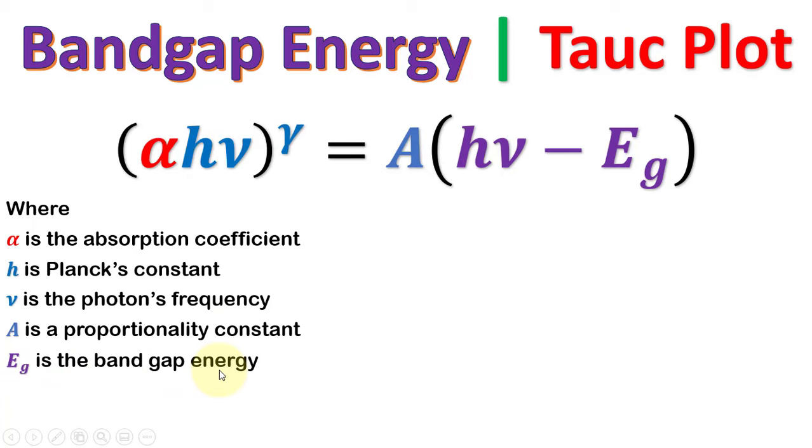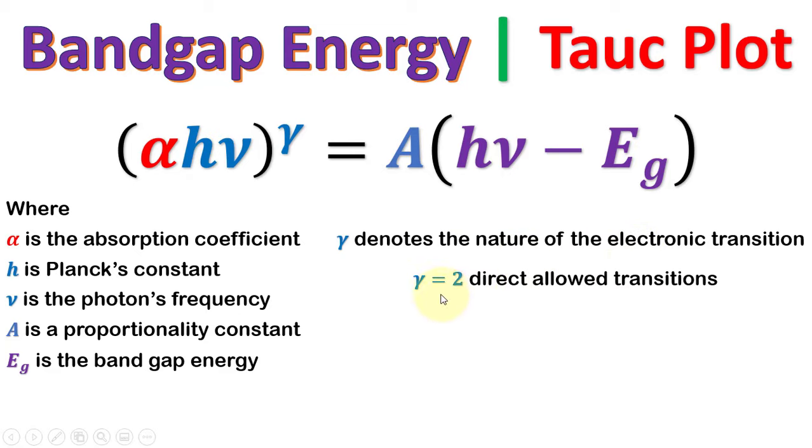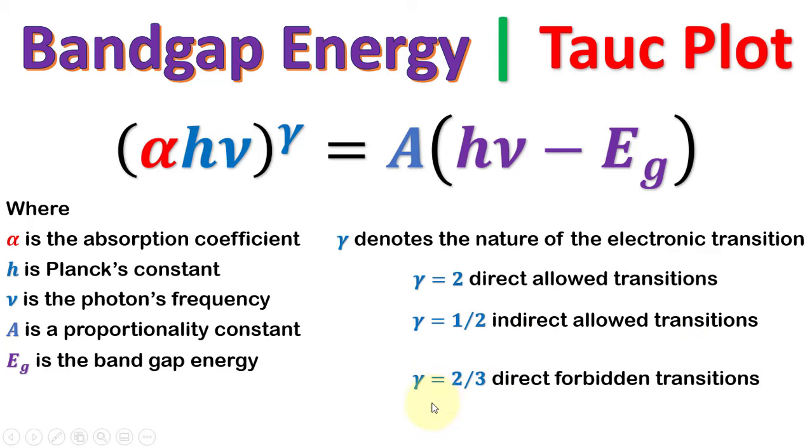The important term is the exponent gamma which denotes the nature of the electronic transition. When gamma equals 2, it is a direct allowed transition. When it equals 1/2, it is an indirect allowed transition. For gamma equals 2/3, it is a direct forbidden transition, and for gamma equals 1/3, an indirect forbidden transition.